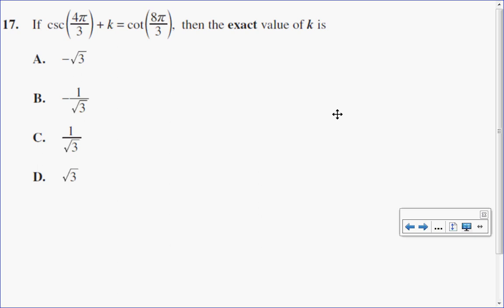In this multiple-choice question, I have a trig equation in which I need to find the exact value of k. I have cosecant of 4π over 3 plus k equals cotangent of 8π over 3. The best place to start is to find the points on the unit circle and their coordinates.